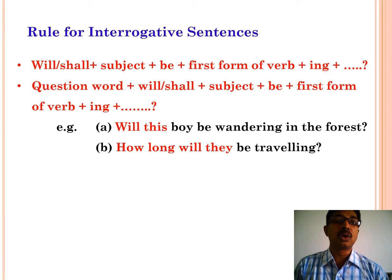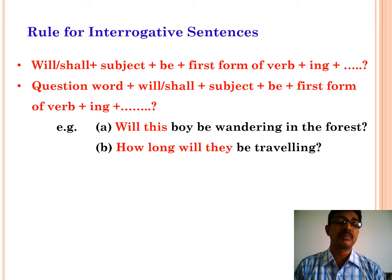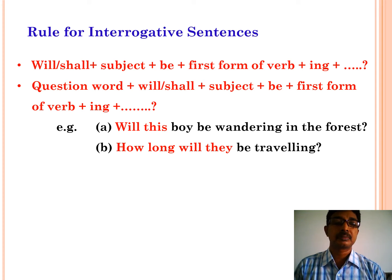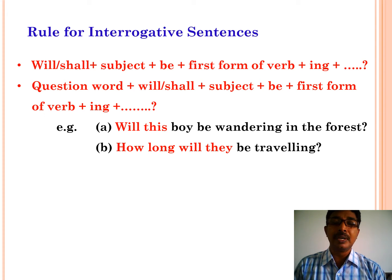Now let us see the rules for interrogative sentences in future continuous tense. The structure is: will or shall — plus subject — plus be — plus first form plus -ing — plus object — plus question mark. For example: will this boy be wandering in the forest? Second example: how long will they be travelling?